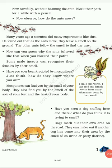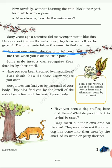Now, carefully without harming the ants, block their path for a while with a pencil and observe how the ants move. The ants will climb up on the pencil and still move in a line. Why is this happening? Many years ago, a scientist did many experiments like this. He found that as the ants move, they leave a smell on the ground, and the other ants follow that smell to find their way.